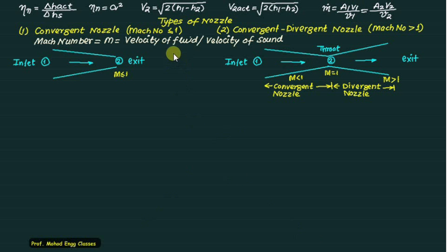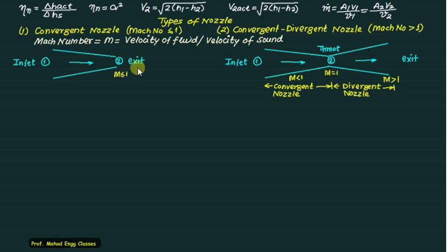For classification of nozzles, we define the Mach number as the velocity of the fluid divided by the velocity of sound. In a convergent nozzle the Mach number is less than or equal to one; the maximum achievable Mach number at the throat is one, which equals the velocity of sound. If you want to exceed this velocity you must use a convergent-divergent nozzle.